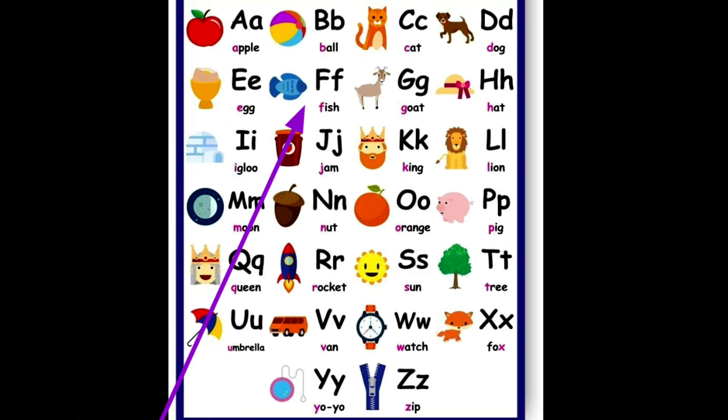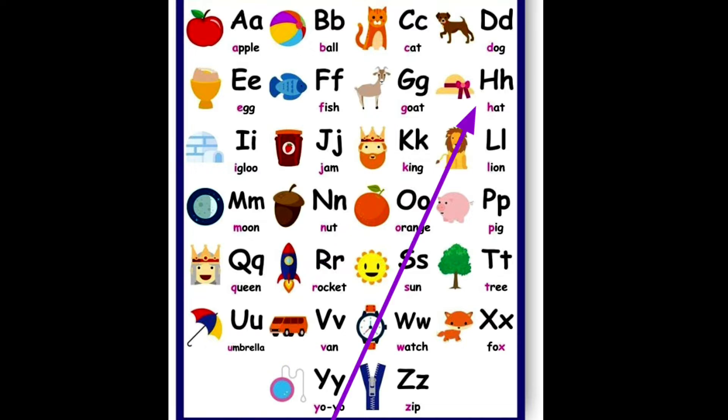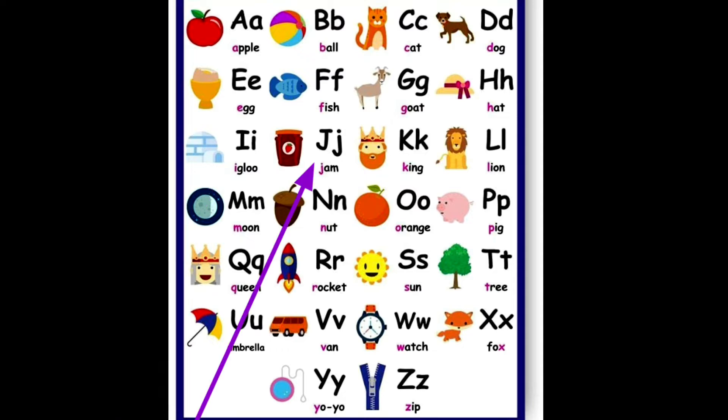F for fish, G for goat, H for hat, I for igloo, J for jam.